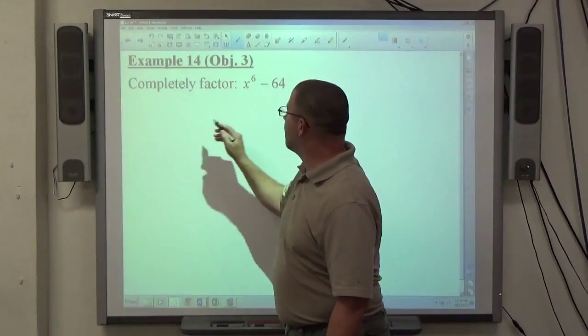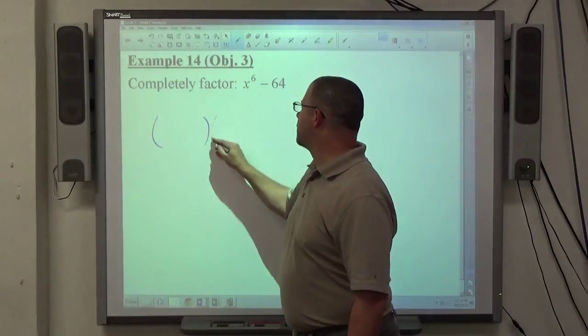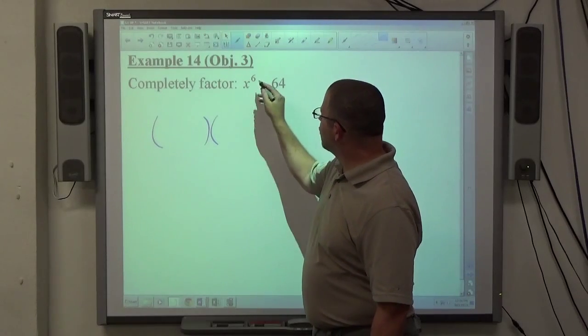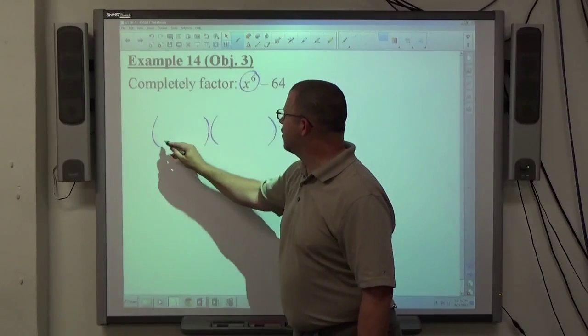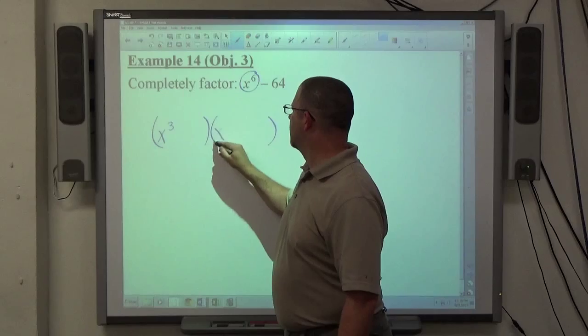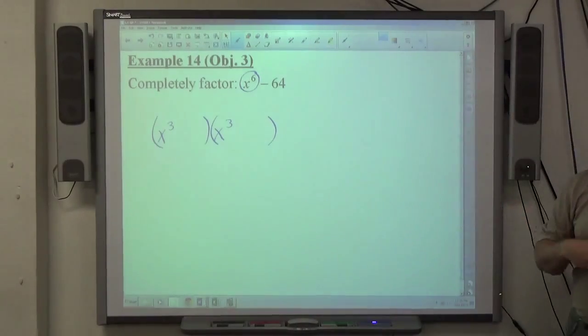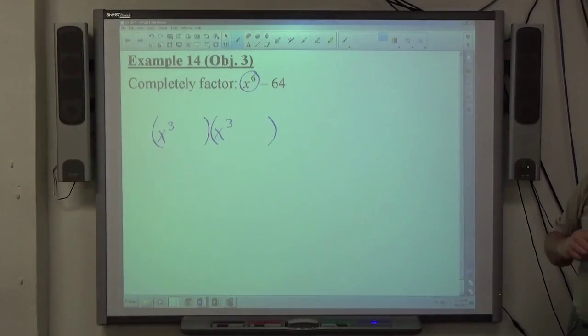So if I'm looking at this as a difference of squares, we're going to do parentheses, parentheses. And the square root of X to the 6 is X cubed. Anytime you root a power, you're just going to divide the power by the root. So 6 divided by 2 is 3.